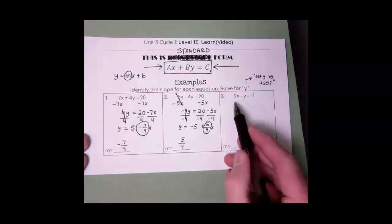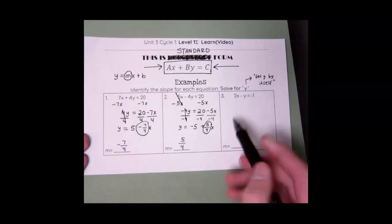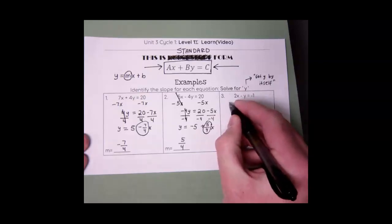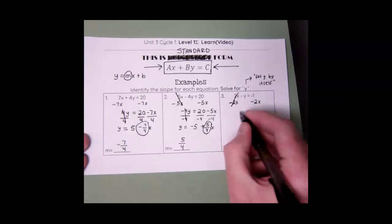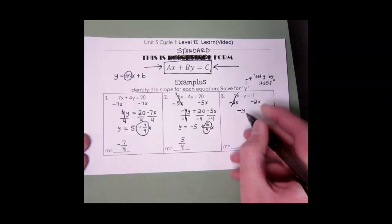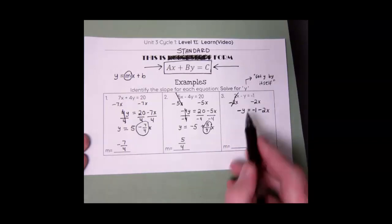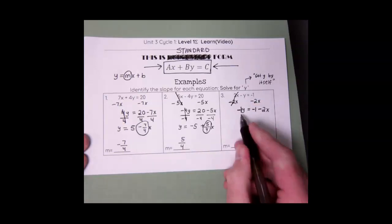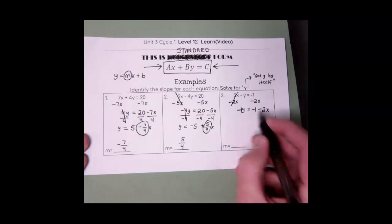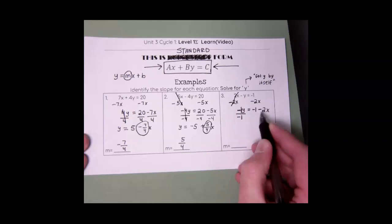Let's try our last example: 2x minus y equals negative 1. I want y by itself, so I'm going to bring 2x over — that's my first step. Remember this all goes away. So I get negative y — don't forget that negative — equals negative 1 minus 2x. Now y is not completely by itself yet. We can assume there's a negative 1 multiplied by y, so there's a 1 in between.